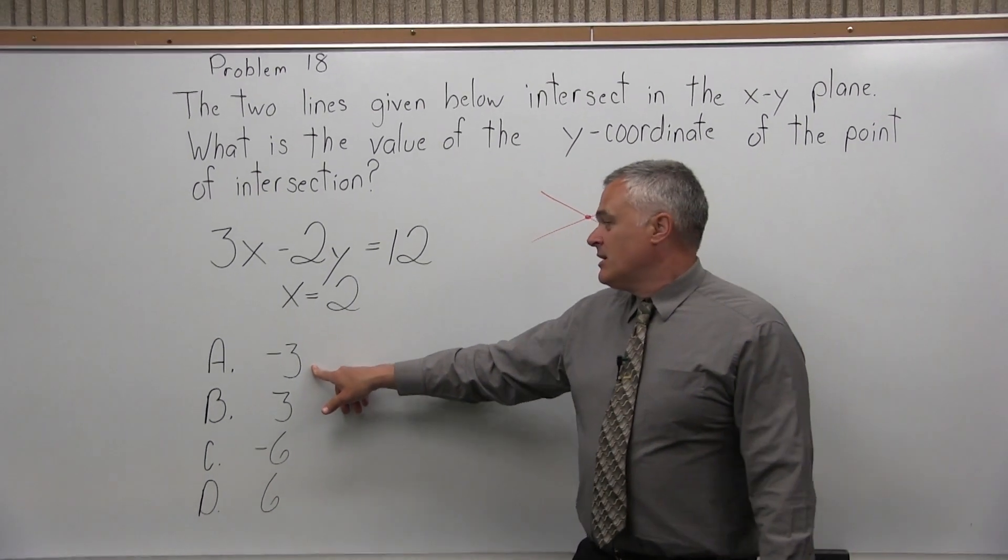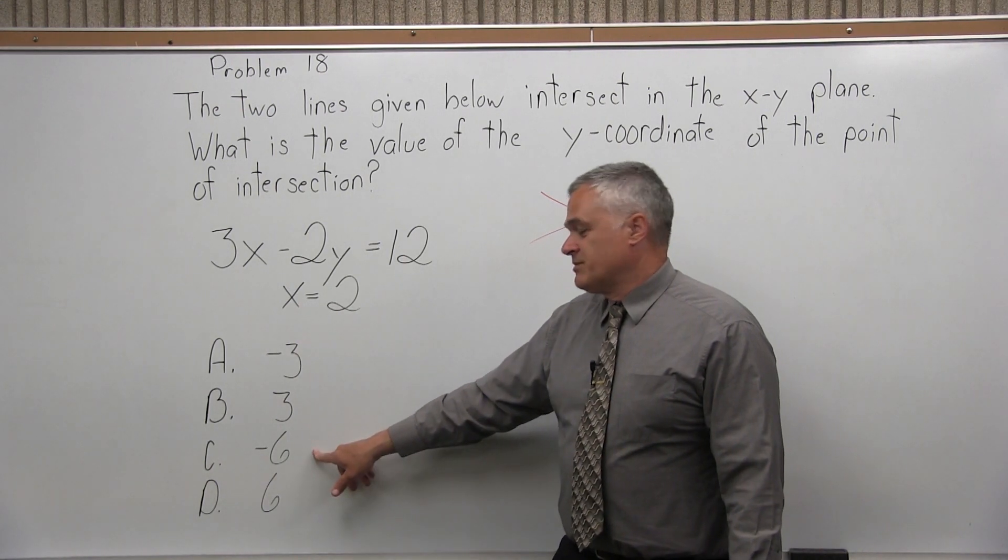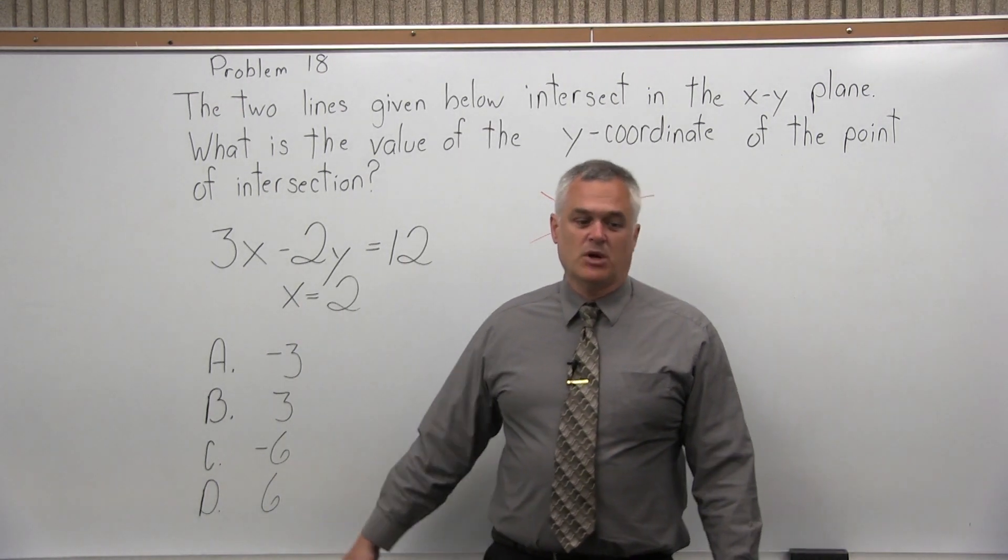We have four options. Option A is negative 3, option B is positive 3, option C is negative 6, and option D is positive 6.